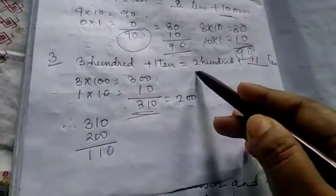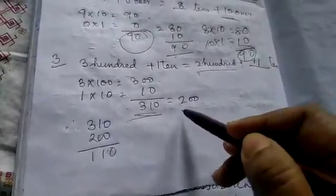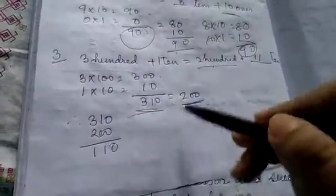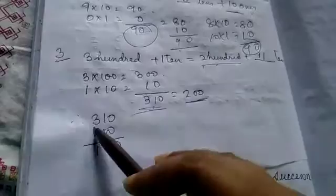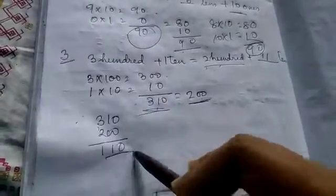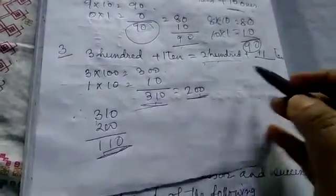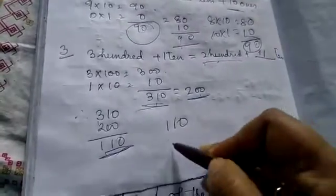From that answer is given like this. 200 in your book. So 200 you are taking. So how much is left? From 300, 200 went there, 110 is left. So how many tens are there? In 110 how many tens are there?